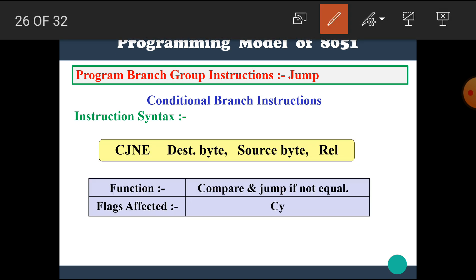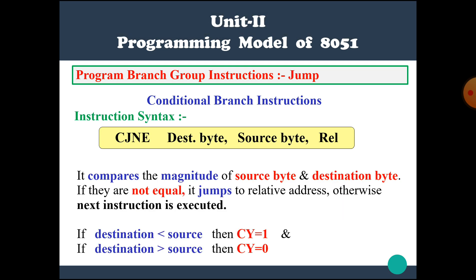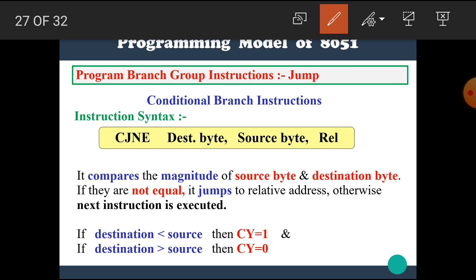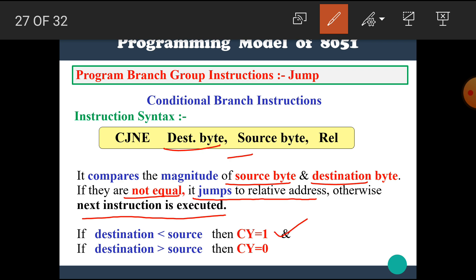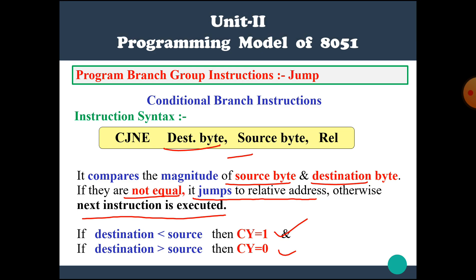The next instruction is CJNE, which stands for compare and jump if not equal. Its syntax is CJNE destination byte, source byte, relative address. It affects the carry flag. It compares the magnitude of the source byte and the destination byte — if they are not equal, then jump to the relative address; otherwise the next instruction is executed. If destination is less than source, carry equals 1; if destination is greater than source, carry equals 0.